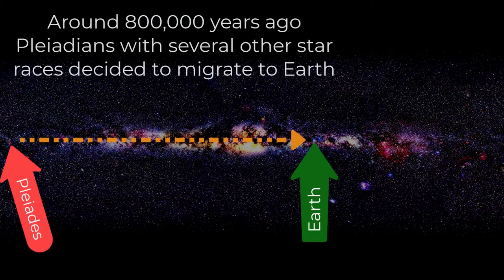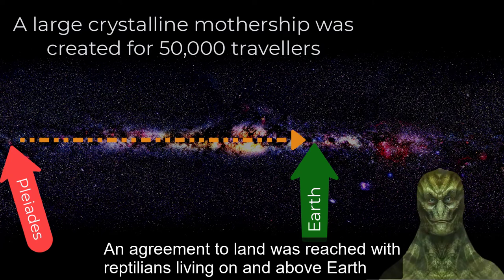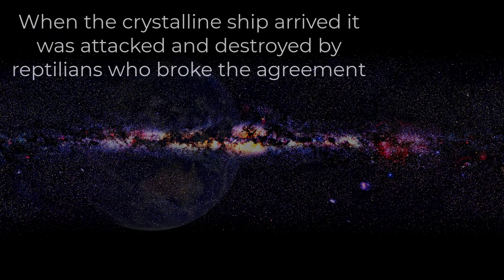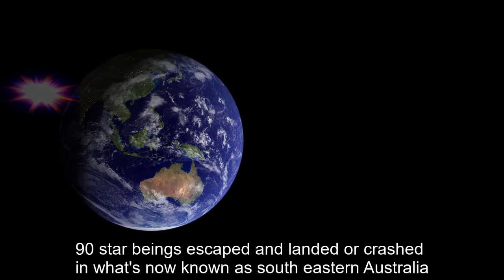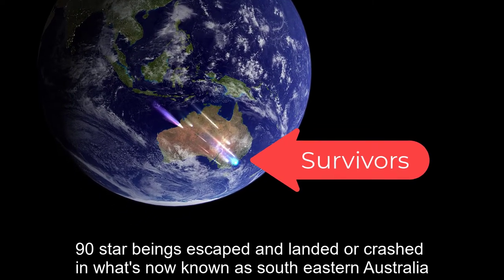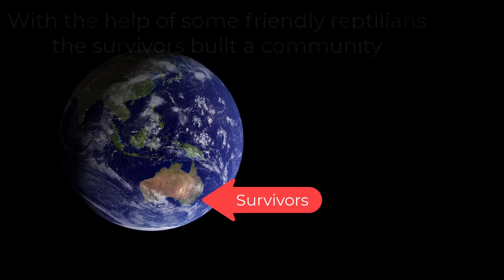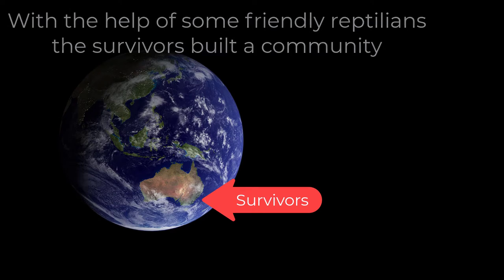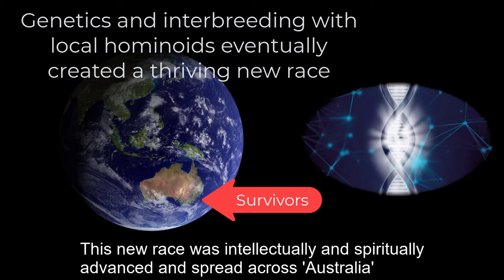Around 800,000 years ago, Pleiadians with several other star races decided to migrate to Earth. A large crystalline mothership was created for 50,000 travellers. An agreement to land was reached with the reptilians living on and above the Earth. When the crystalline ship arrived, it was attacked and destroyed by reptilians who broke the agreement. Ninety star beings escaped and landed or crashed in what is now known as Southeastern Australia. With the help of some friendly reptilians, the survivors built a community. Genetics and interbreeding with local hominoids eventually created a thriving new race that was intellectually and spiritually advanced and spread across Australia.